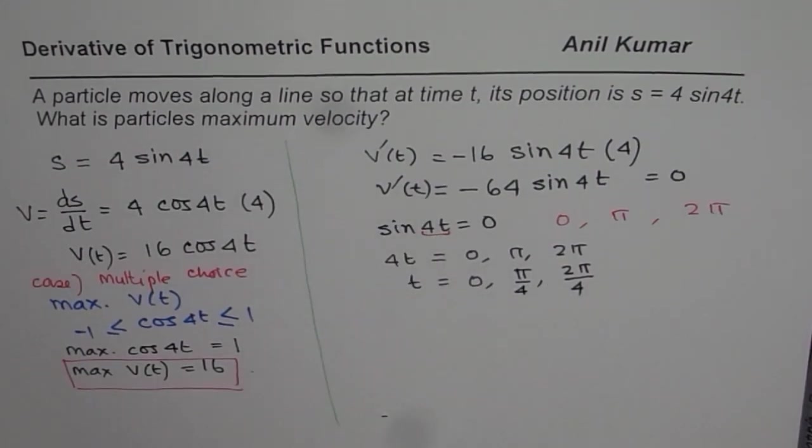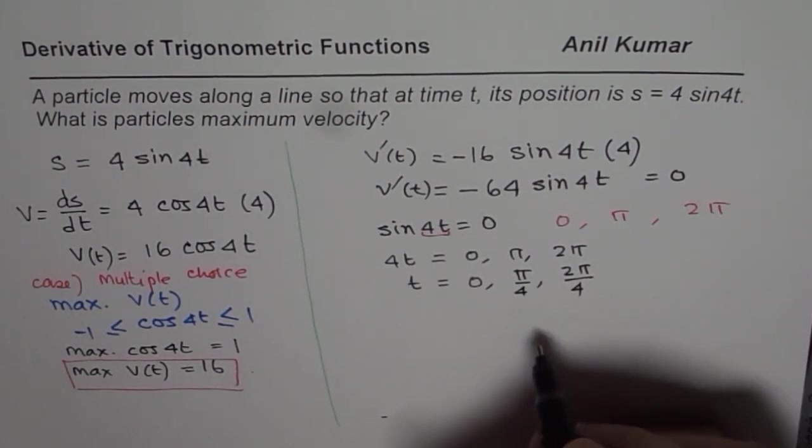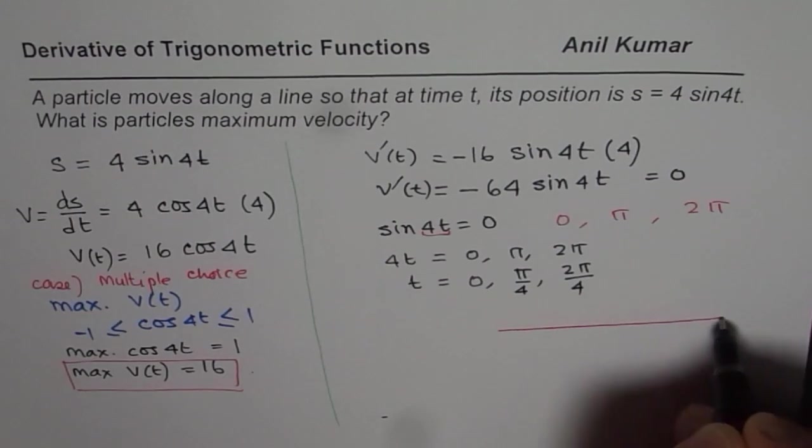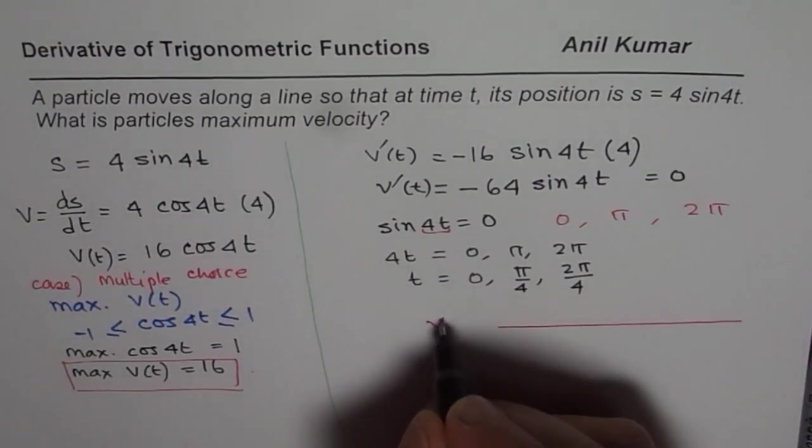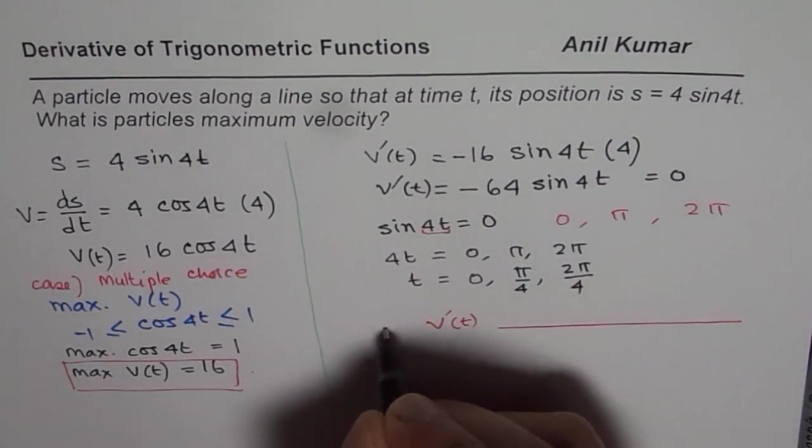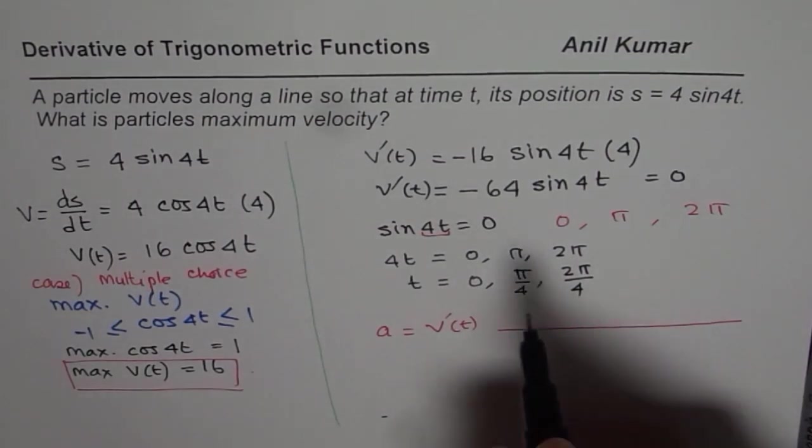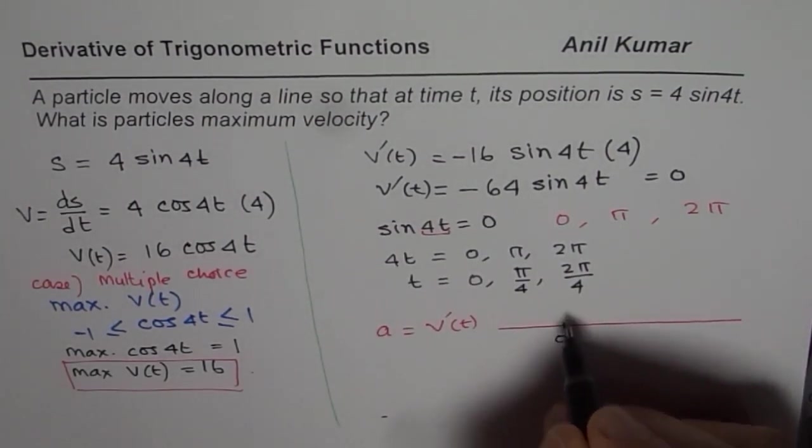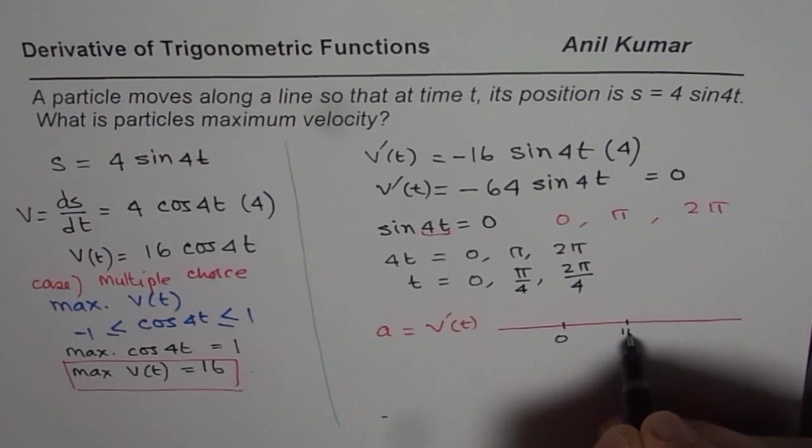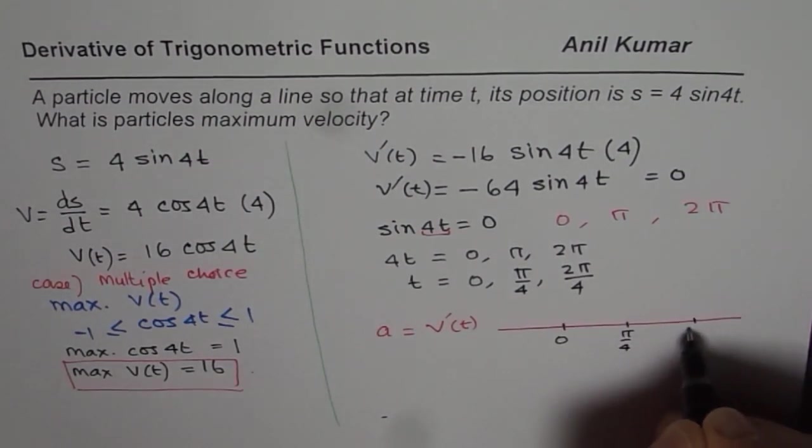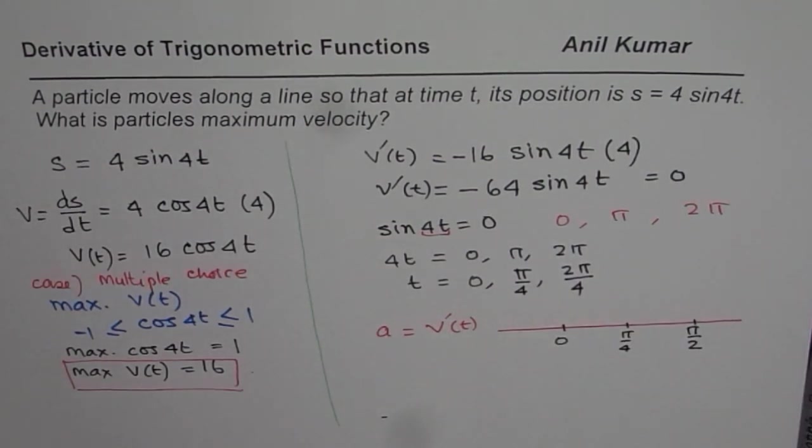So we can now test these critical numbers. We have the derivative of velocity which indeed is acceleration. On this we have three critical numbers: 0, pi by 4, and pi by 2. Those are the angles for us.